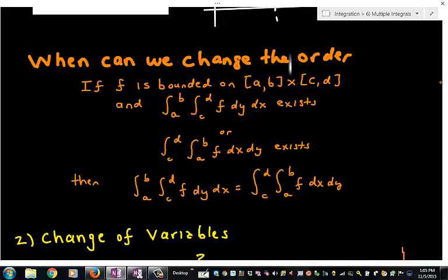I won't go into the proof. It's quite difficult to prove. But long story short, it says that if the function is bounded on this rectangle, and this notation refers to the Cartesian product—this area right here—if F is bounded on a finite rectangle and one of the integrals exists, then we can switch the order of integration.